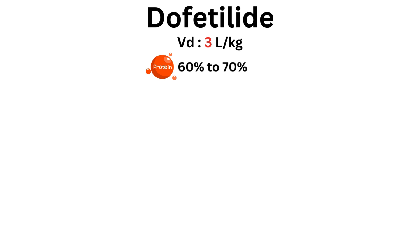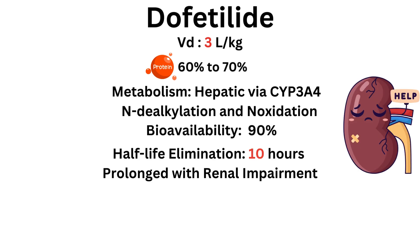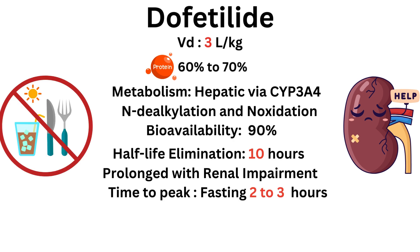Volume of distribution: 3 liters per kilogram. Protein binding: 60% to 70%. Metabolism: mainly hepatic via cytochrome P450 3A4; metabolites formed by N-dealkylation and N-oxidation. Bioavailability: 90%. Half-life: 10 hours, prolonged with renal impairment.